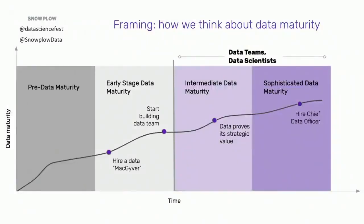The other important thing is how we think about data maturity, broken into maybe four rough phases. Very early, before being ready for any of this stuff, we call that pre-data maturity. Then early stage data maturity - this is where you maybe hire your first data MacGyver: a single person who's a huge fixer, rolls their sleeves up, starts building stuff, and gets some initial value out of a company's data.